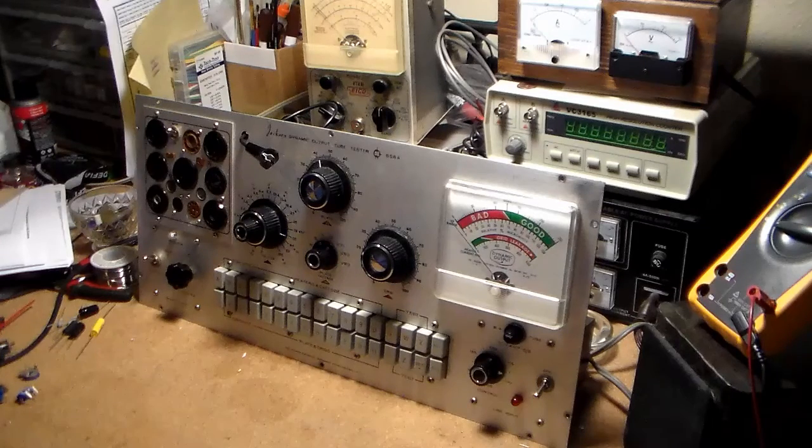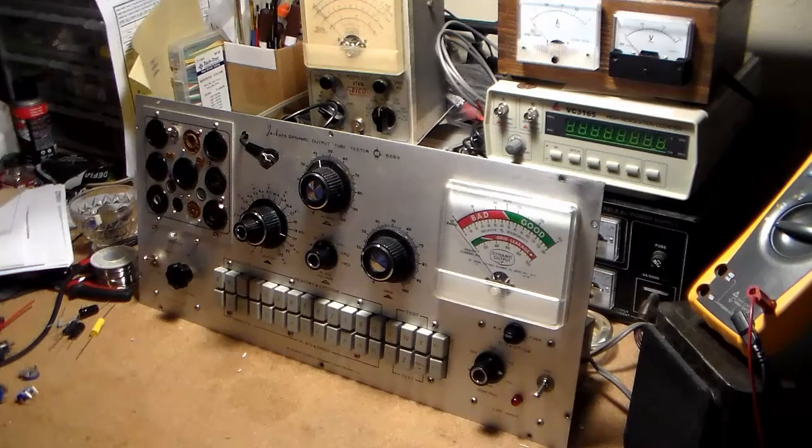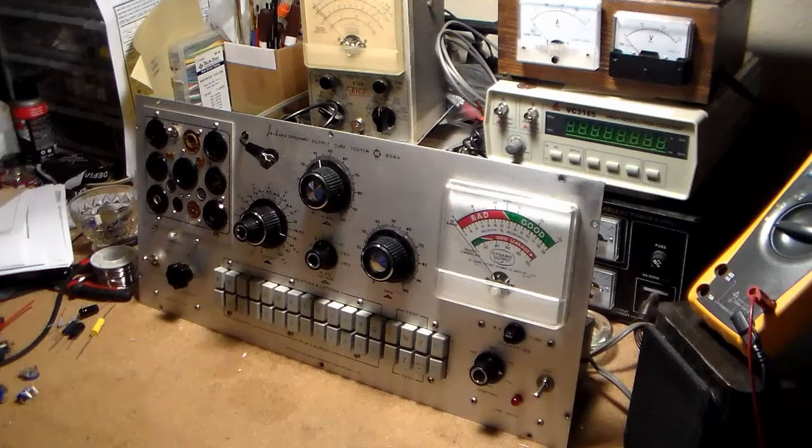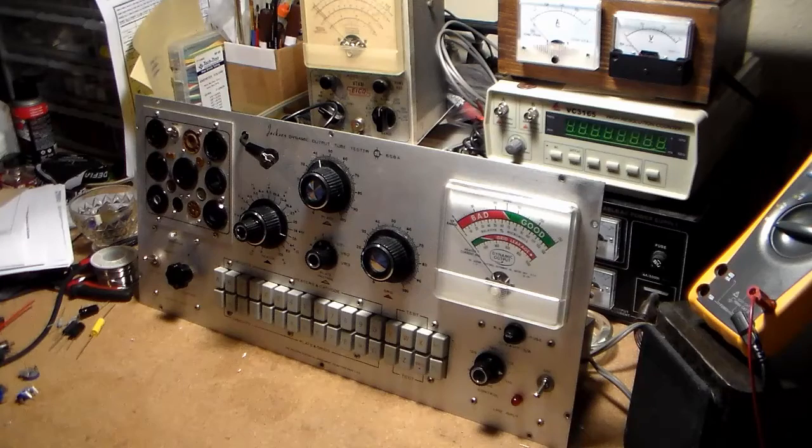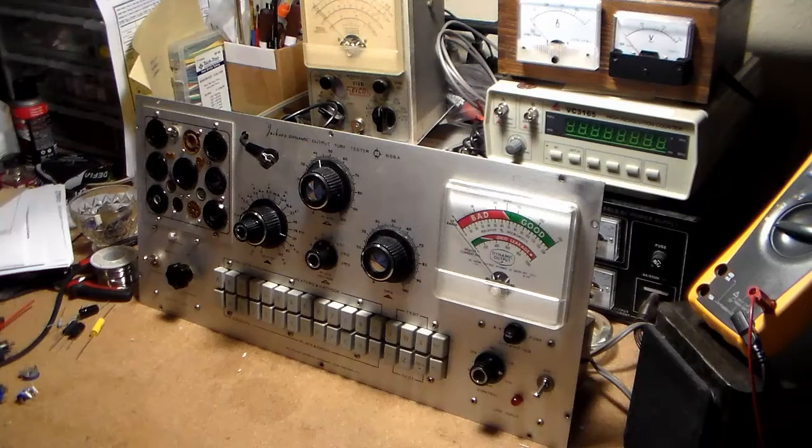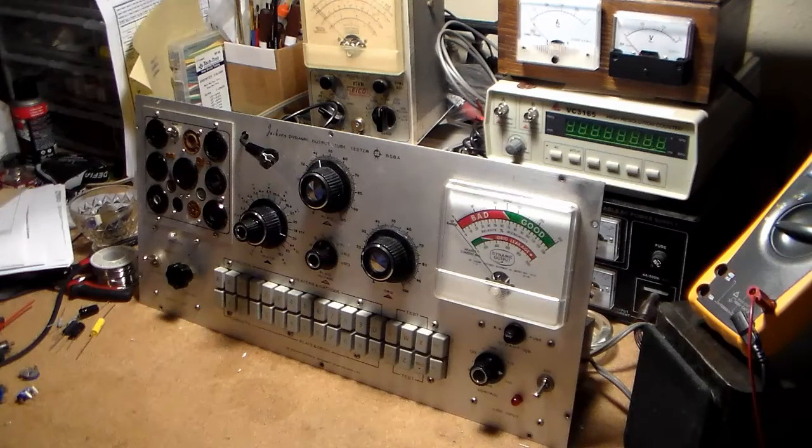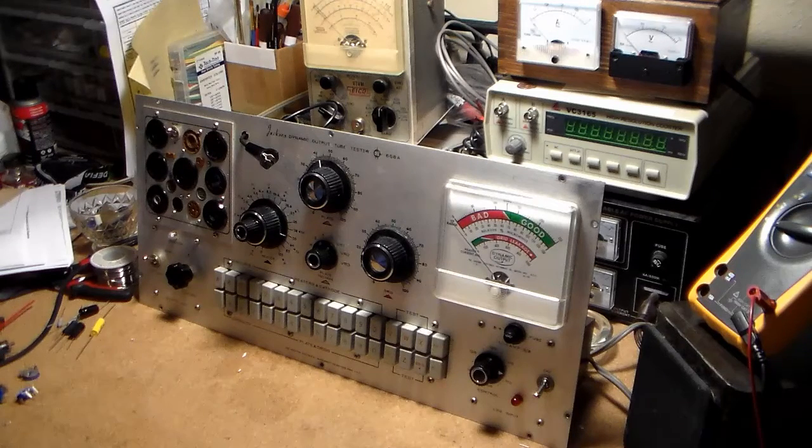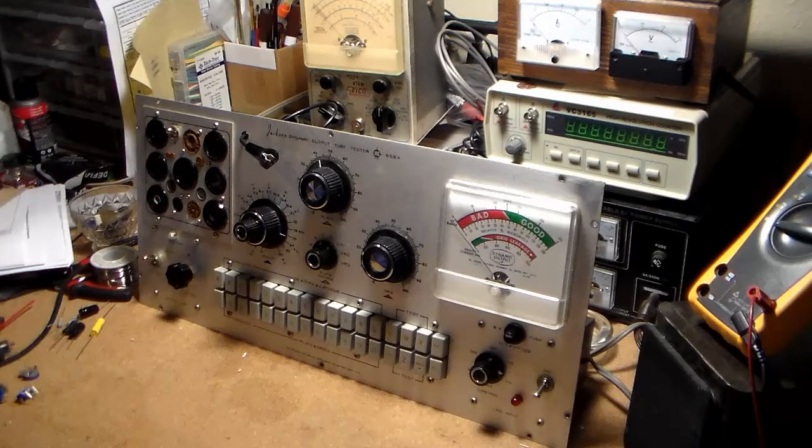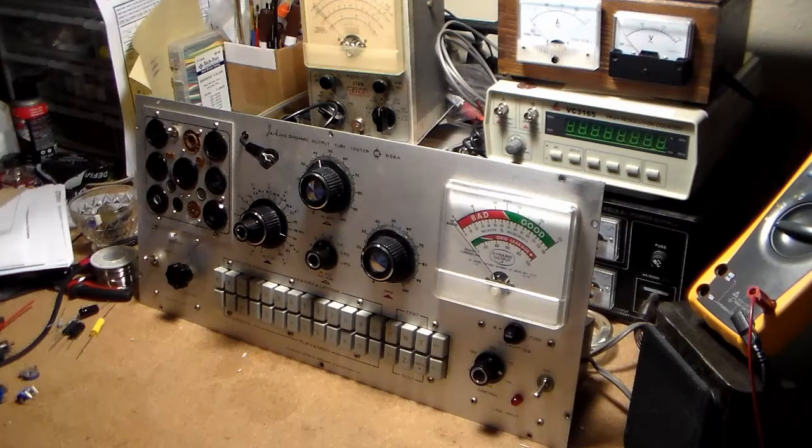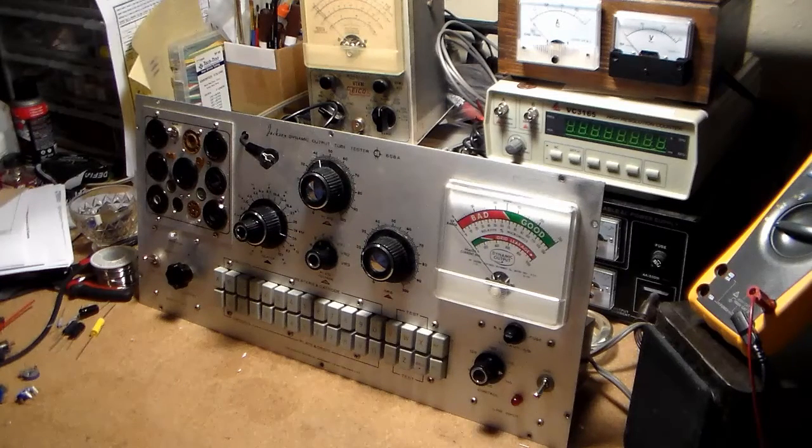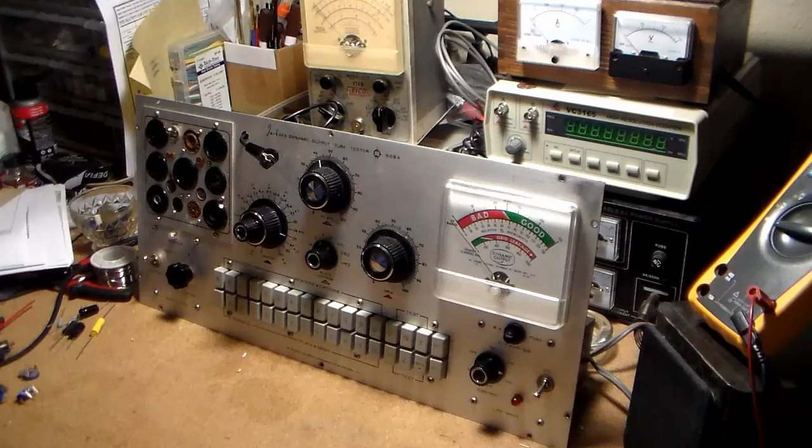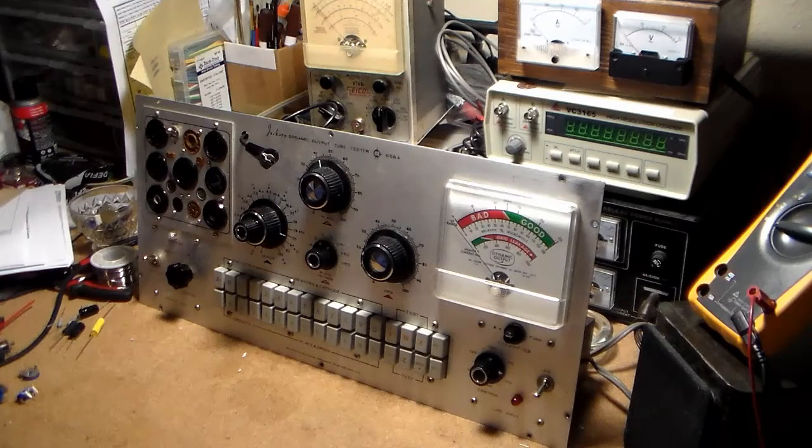Since I didn't really want to troubleshoot that one yet, only because I fear that whatever's wrong with it may be fatal because there are certain things that can go wrong with those that are impossible to or nearly impossible to replace. And actually I suspect it's the bias pot and that's one of the fatal items.